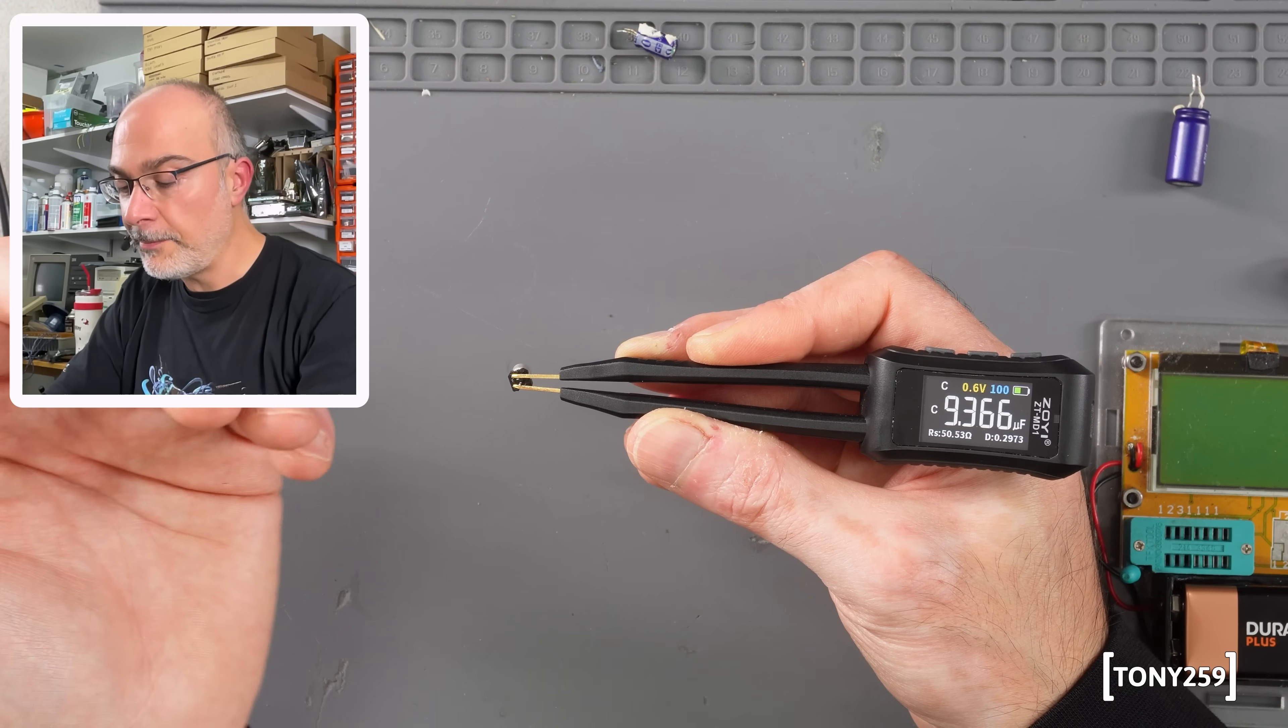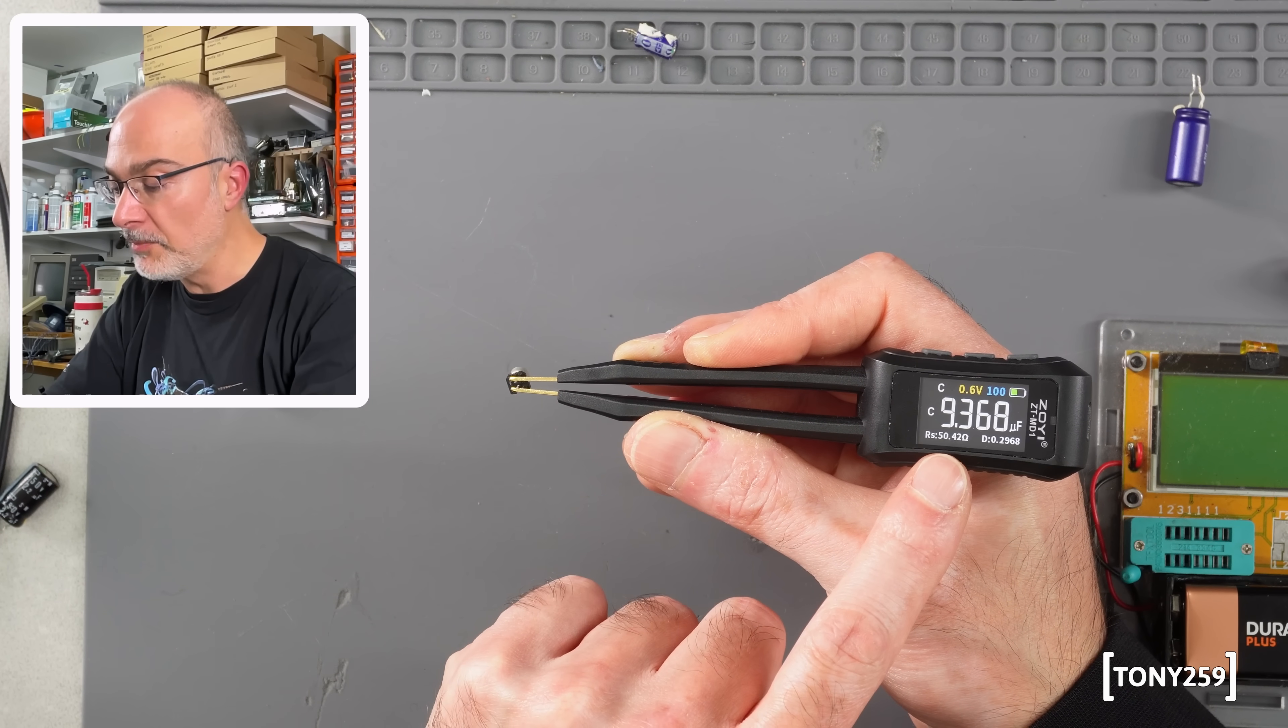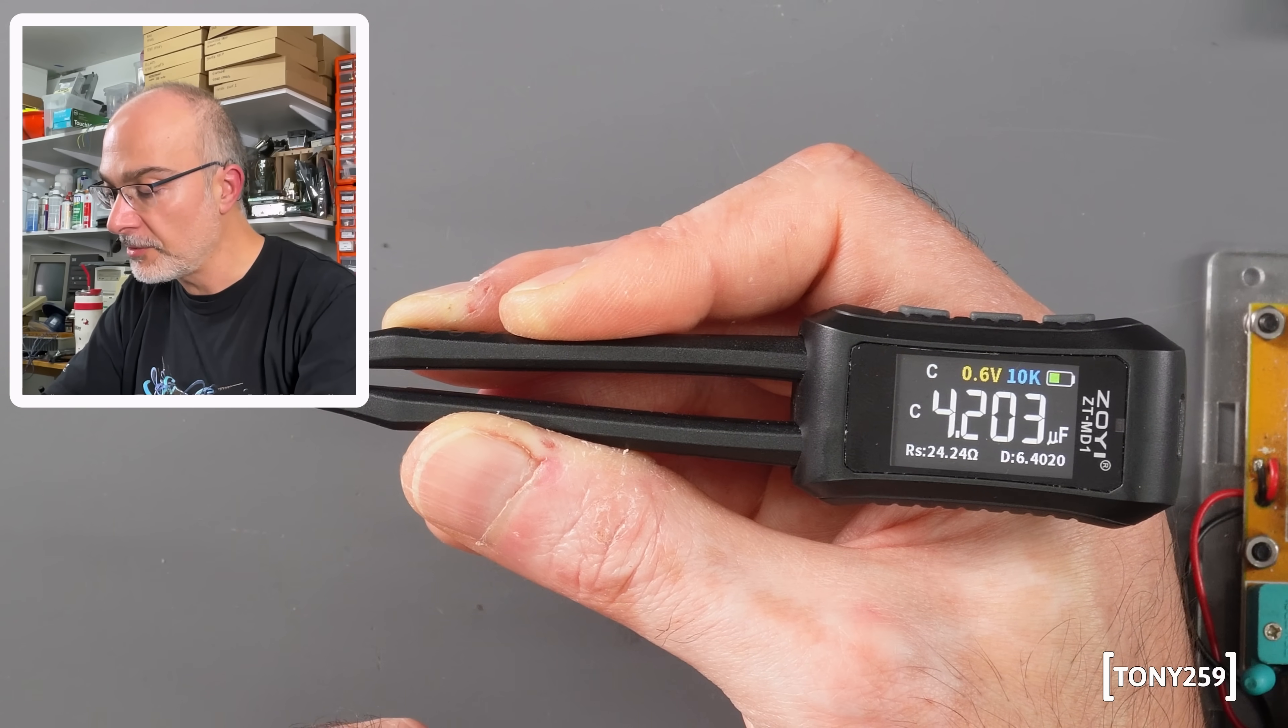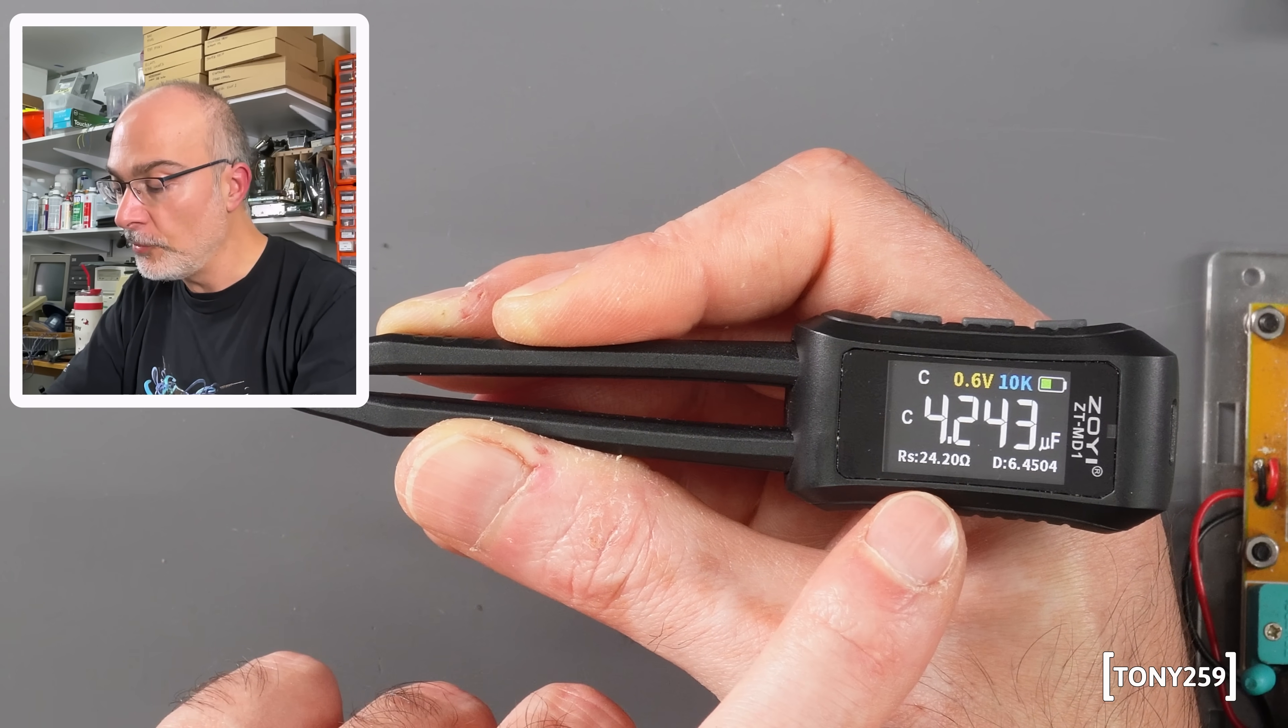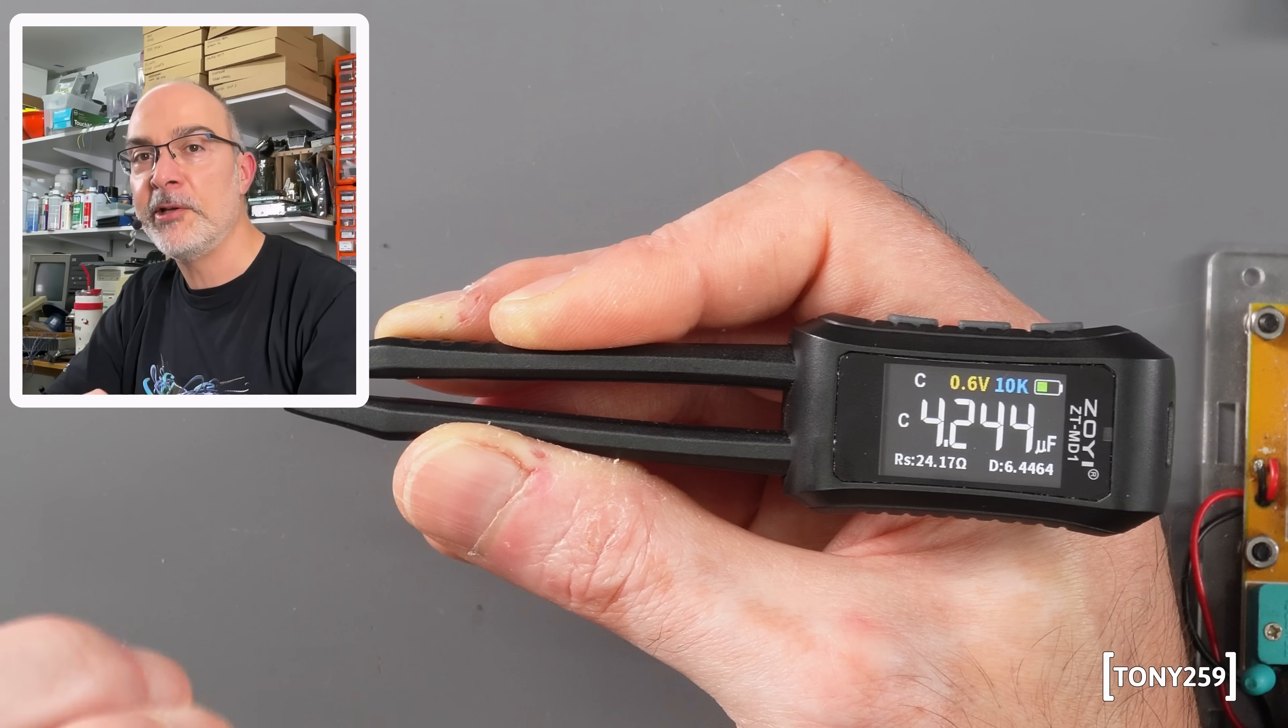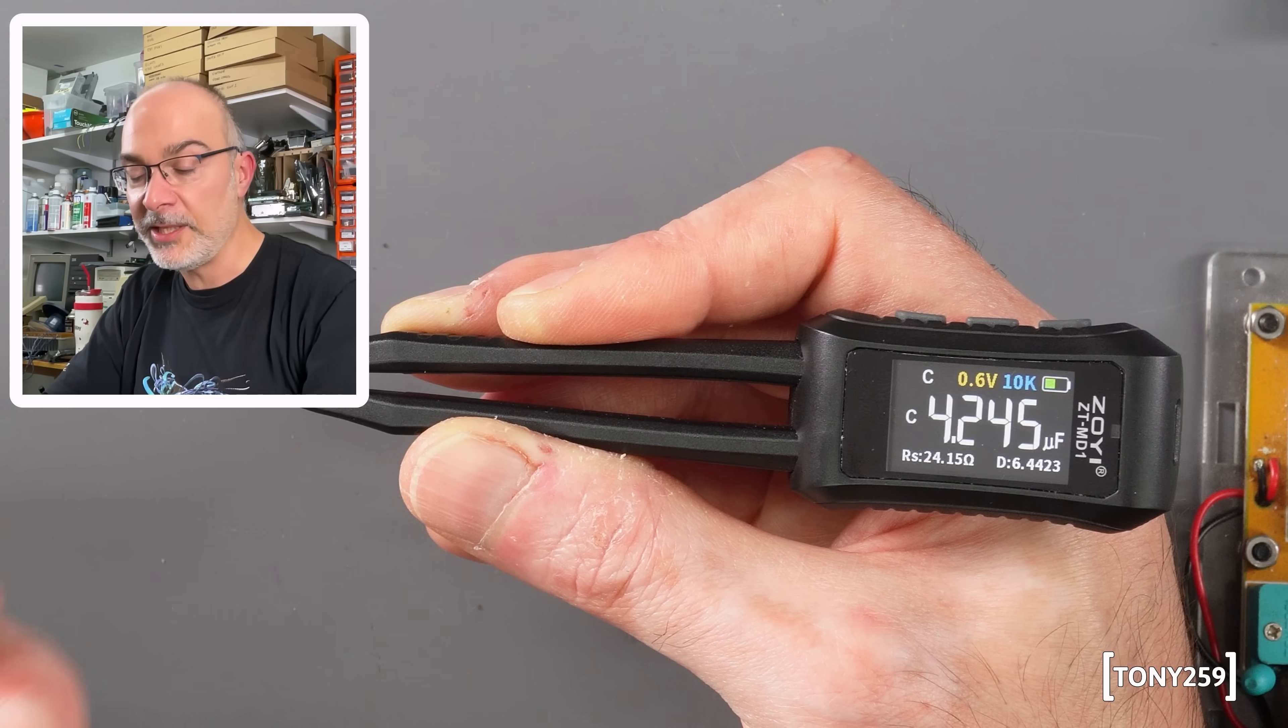This is an SMD capacitor, it's supposed to be 10 microfarad, it's completely gone. It's reading 10 microfarad, but the ESR is 50 ohms, so it's completely gone at 100 hertz. If I switch this to 10 kilohertz, it's now not even reading the correct capacitance, it's 4.2, and the ESR is way off at 24 ohms. I like that I can actually check different frequencies to actually confirm that there is a problem with the capacitor I'm testing.